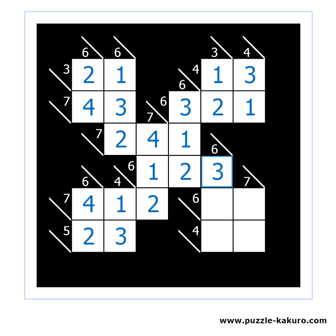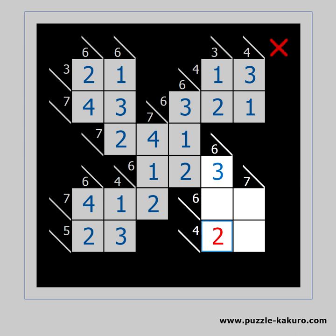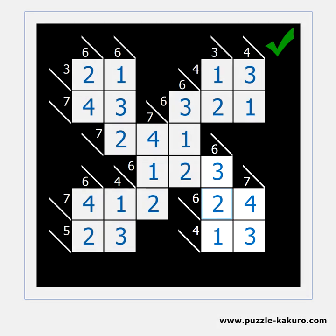We are almost there. We need a 1 and a 2 for the vertical 6, but we cannot have 2 in the 4, so we must have a 1 there. Now we can solve the 4 horizontally, then the 7 vertically, then the 6 horizontally. And the puzzle is solved.